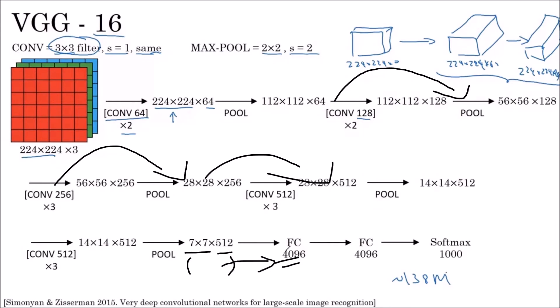After flattening, in the fully connected layer we have 4096 neurons. In the second fully connected layer, we have 4096 neurons. In the final layer, we have 1000 neurons in the output layer, which is a softmax layer.